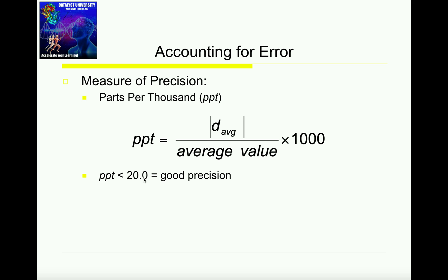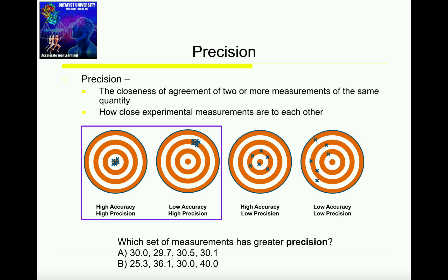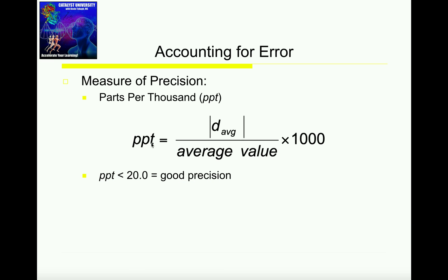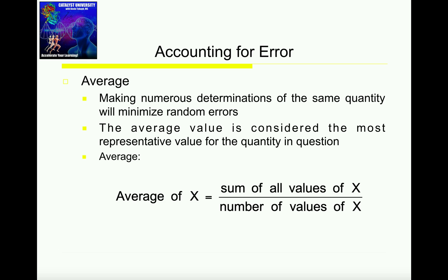So let's just do a brief review of everything we talked about in this video. Remember what precision is — it's how close experimental measurements are to one another. We can't just eyeball it and say those are precise or not precise. We have to quantify it. The way we do it is we calculate a parts per thousand and compare it back to 20.0. To do that, we first calculate the average of all the numbers.